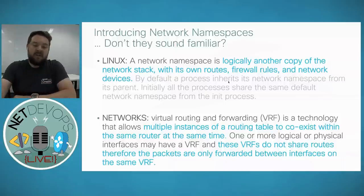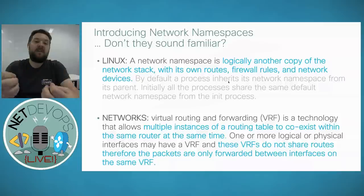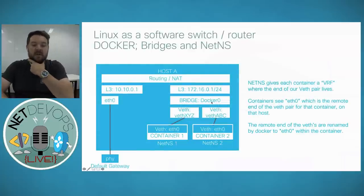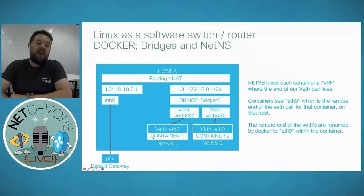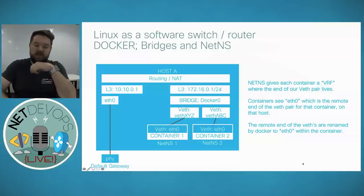This is the second part of the magic: Linux network namespaces. A Linux network namespace is logically another copy of the Linux networking stack — it has its own routes, its own firewall rules, and its own network devices. Doesn't that sound familiar? It sounds just like a VRF, which allows multiple instances of a routing table to coexist within the same router. A Linux network namespace is effectively a VRF within a Linux host. We should be able to move the B side of the veth pair into a container's network namespace — its own VRF.